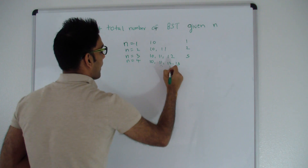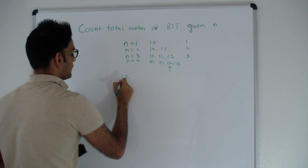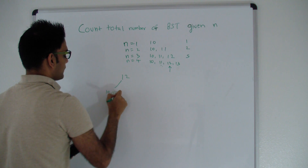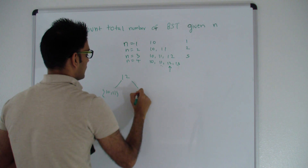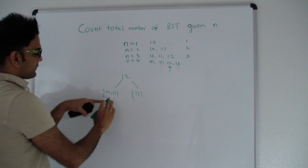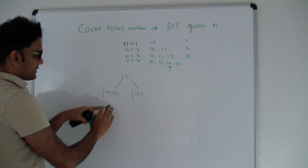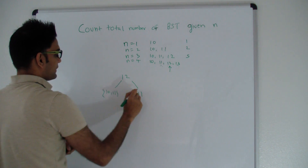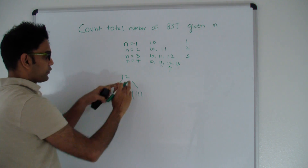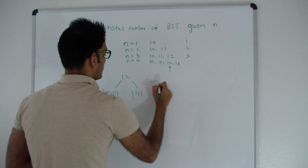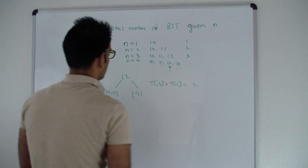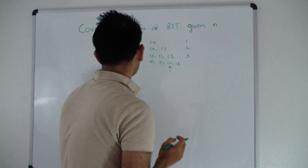When 12 is the root, 10 and 11 go on the left side and 13 goes on the right side. The total number of trees is T(2) × T(1) = 2 × 1 = 2.